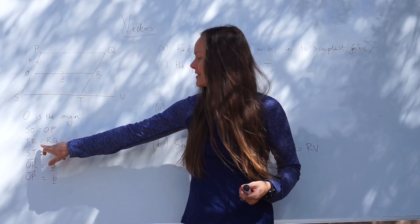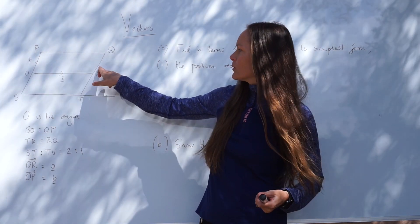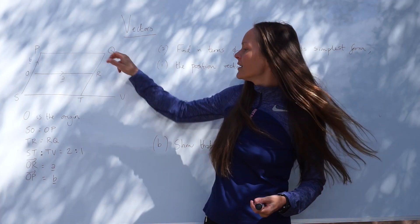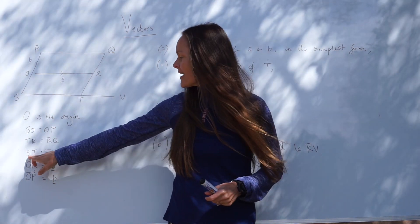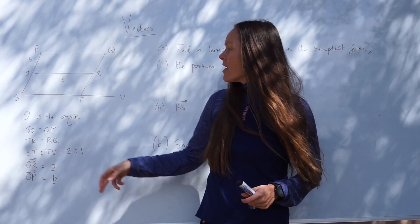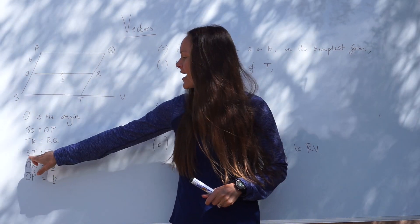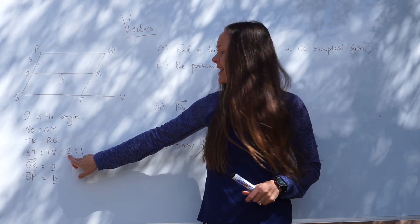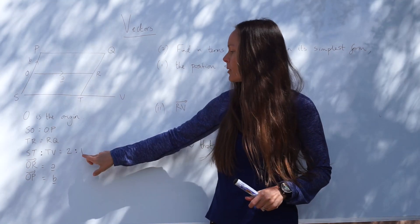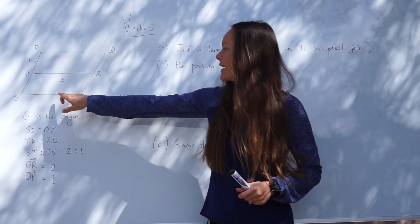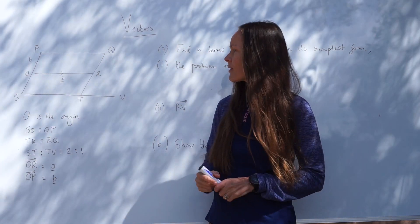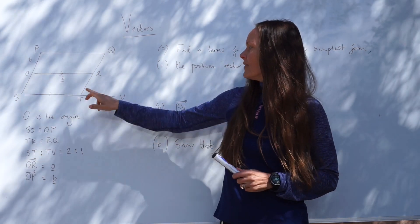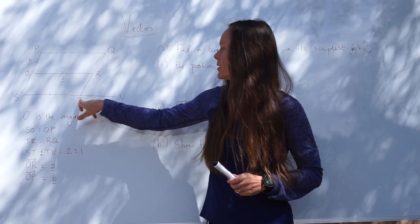We also know that TR is equal to RQ, so this line is equal to this one in length, and they're also parallel because they lie on the same straight line. And then here it says ST to TV equals 2 to 1. That just means that the length ST is made up of 2 parts, and the length TV is made up of 1 part. So if we travel all the way along this line, there are 3 parts altogether: 1, 2, 3 parts here.